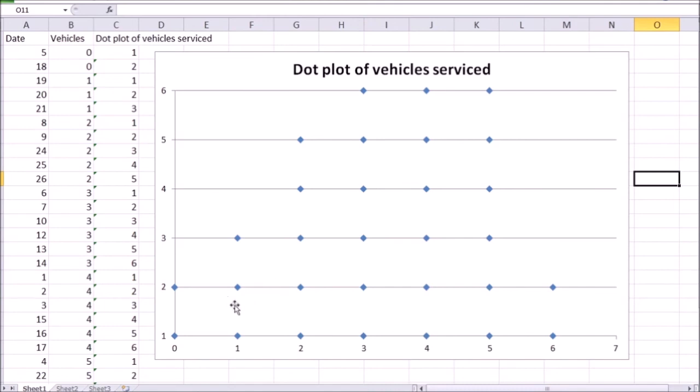So what do we see here? We see that on the horizontal axis, we have our variable of interest, which was vehicles. Zero vehicles were served on two occasions. We have two dots for the value of zero, two observations for the value of zero.